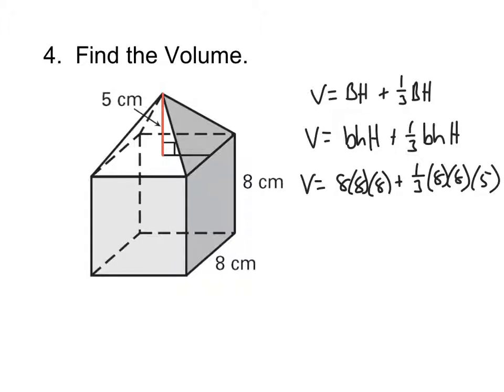All right, so 8 times 8 times 8 gives me 512 plus 8 times 8 times 5 gives me 320. Oops. But the problem is, if I take one-third of 320, I don't get a nice terminating decimal. I don't get a nice whole number. Okay?